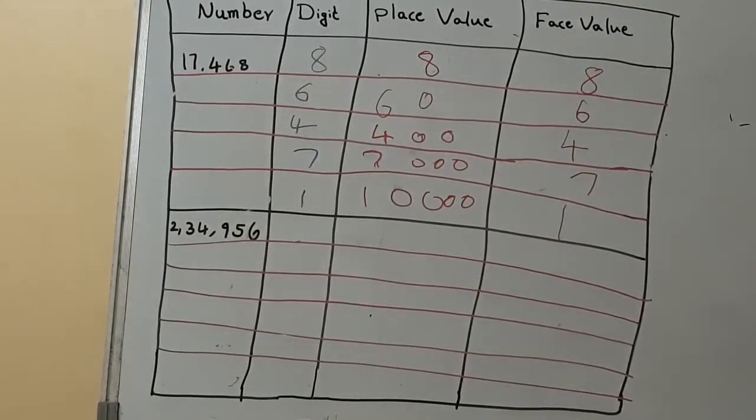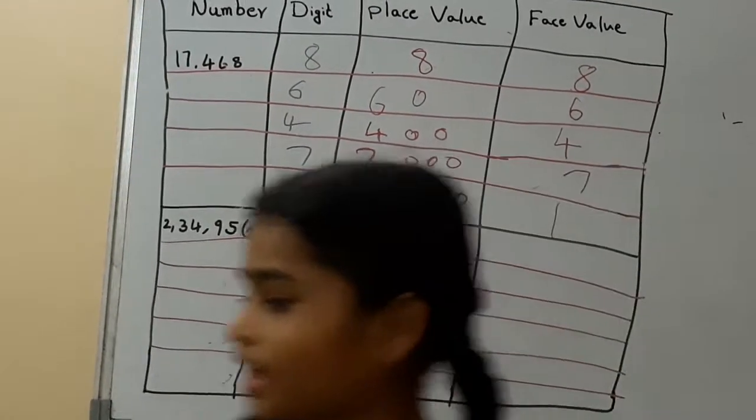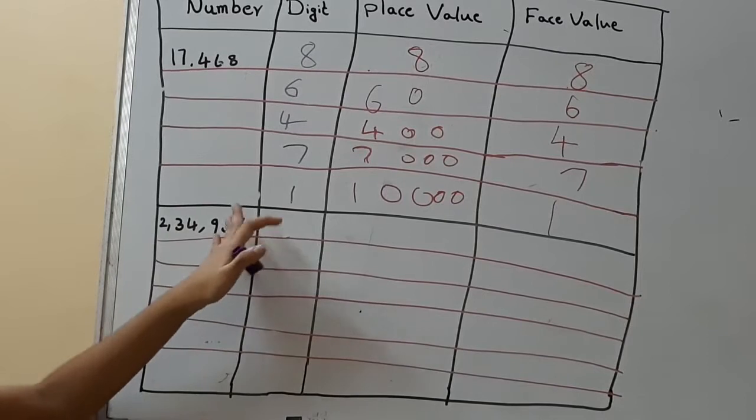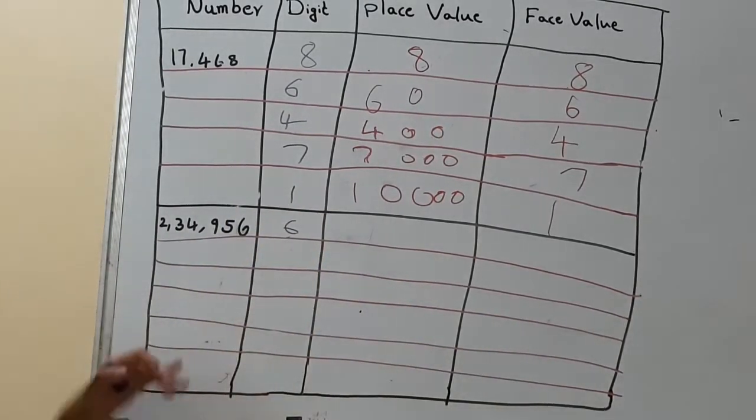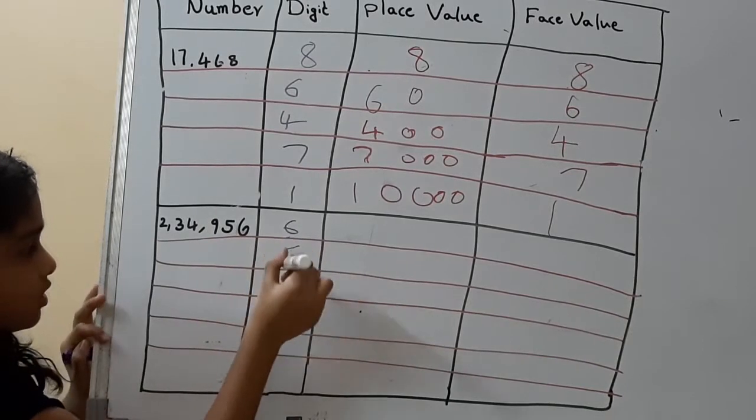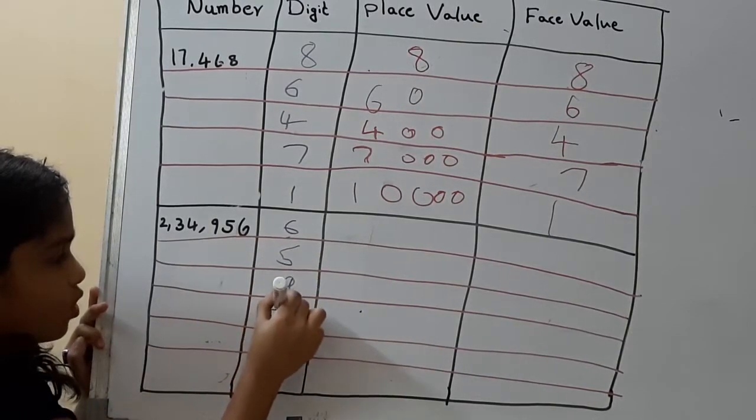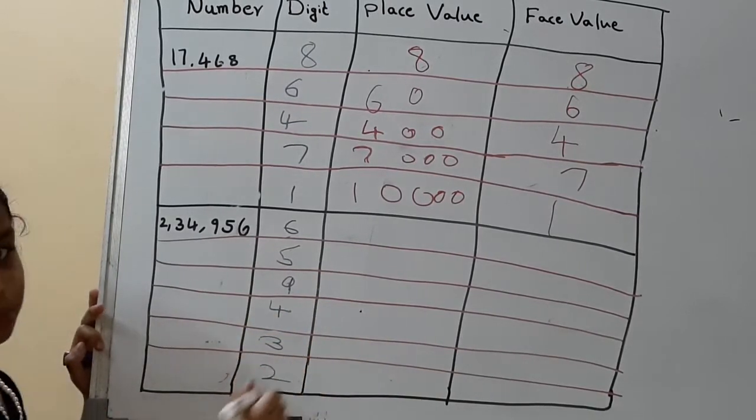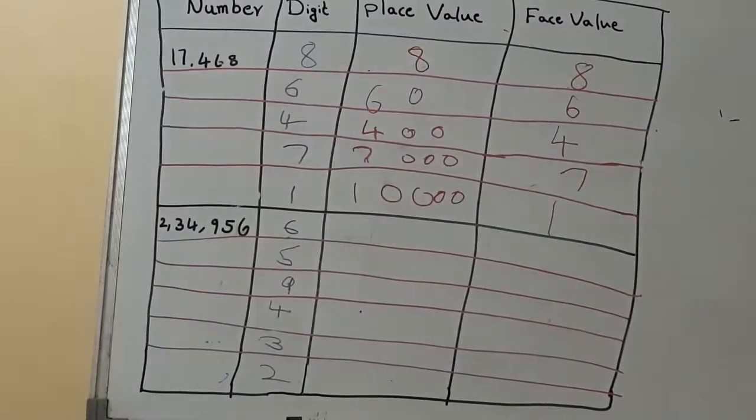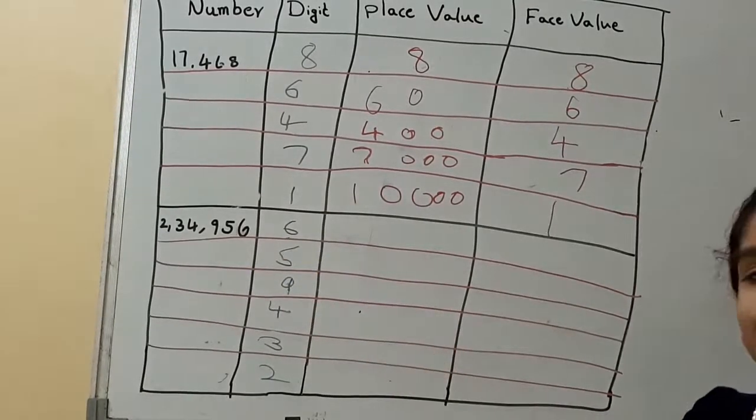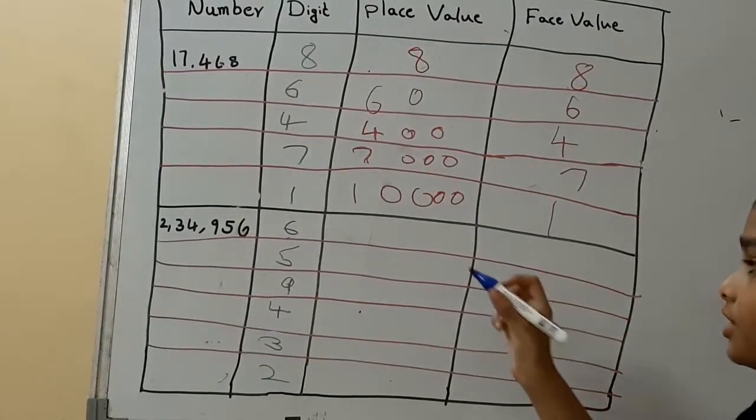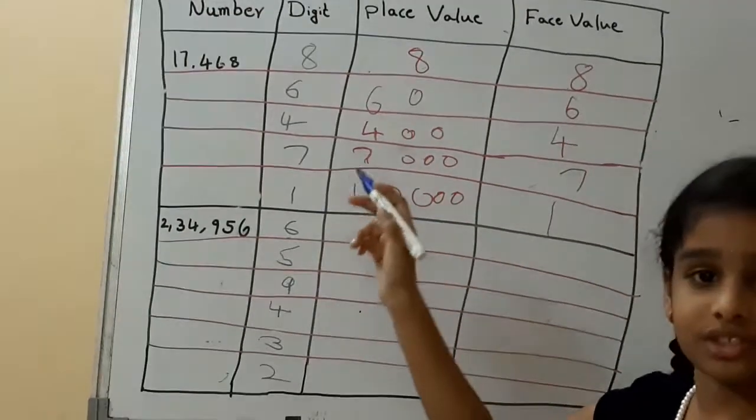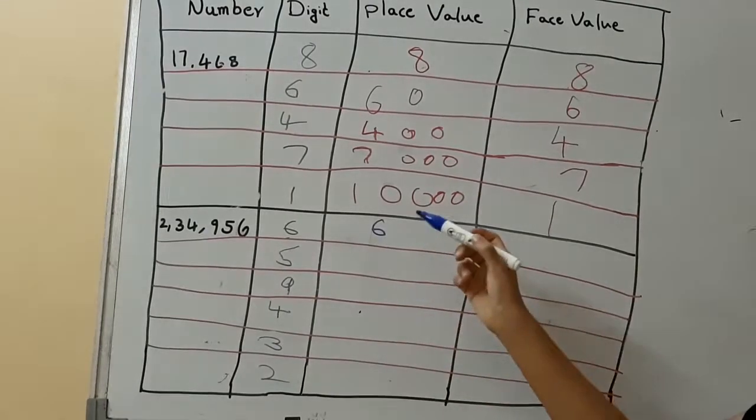And we'll do the second one. So the second one, we'll write 6, 5, 9, 4, 3, and 2. So now, what is the face value of 6? Face value of 6 is 1, so it becomes only 6. No zeros will be there.